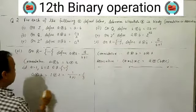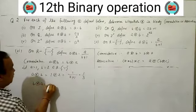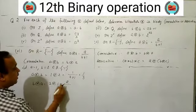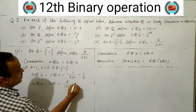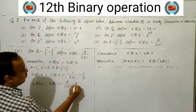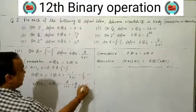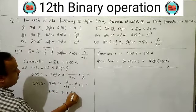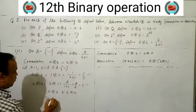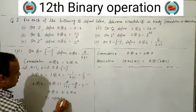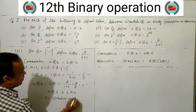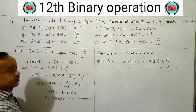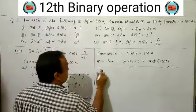B★A = 2/(1+1) = 2/2 = 1. Since 1/3 ≠ 1, A★B ≠ B★A. So the operation is not commutative.